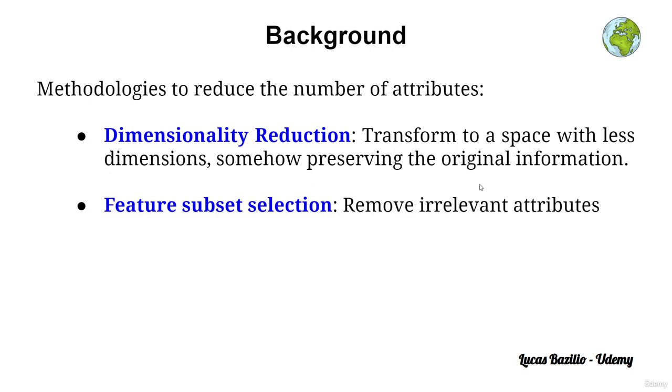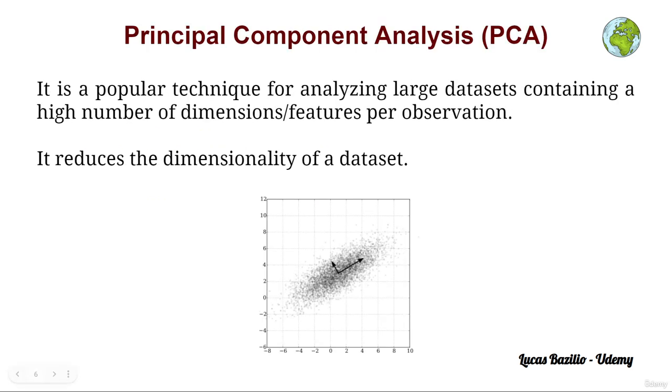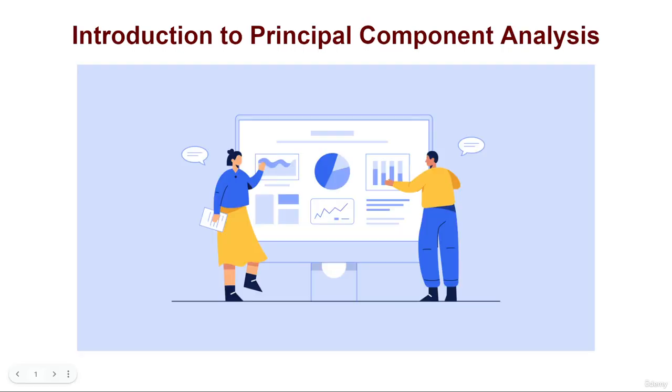Now we will introduce this one that has many techniques and many different and interesting approaches in machine learning. Principal component analysis is a technique that we use for analyzing these very big datasets containing a very high number of attributes and dimensions. With this technique we can reduce the dimensionality of the dataset and also visualize this new transformed dataset on this new number of dimensions.